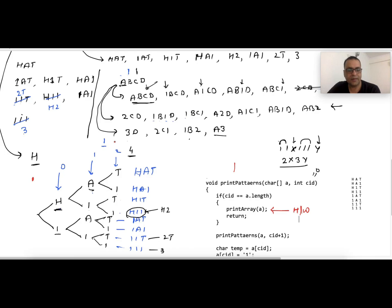So here we are putting out-of-box thinking: why not apply a tree algorithm or an algorithm which is there in the tree data structure? Why not apply that algorithm in this particular problem?